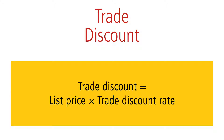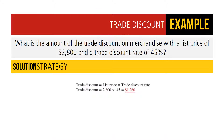Trade discount equals list price times trade discount rate. What is the amount of a trade discount on merchandise with a list price of $2,800 and a trade discount rate of 45%? Trade discount equals $2,800 times 0.45, for a total trade discount of $1,260.